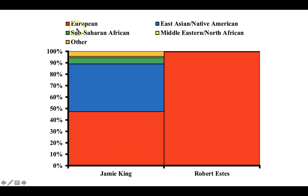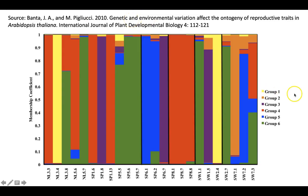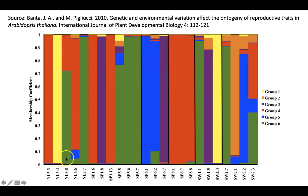Those groups are similar to the ancestries in 23andMe, except that in 23andMe we could give those ancestries a name and a location, whereas here we just know there are six different ancestries. For instance, this particular individual plant has its ancestry almost entirely from group one — likewise for these other plants. But some plants have a very mixed ancestry; for example, this plant has a substantial amount deriving from group six and a substantial amount from group four.